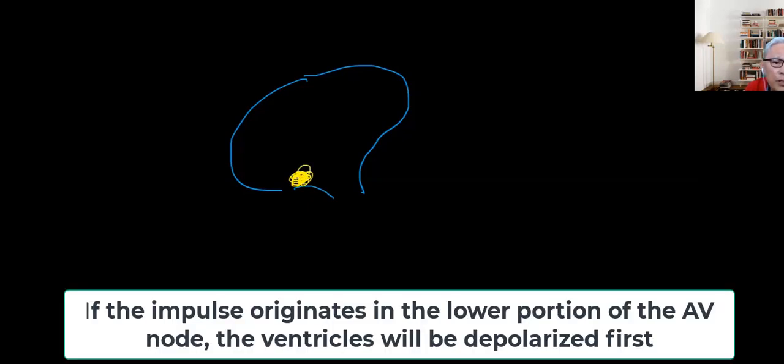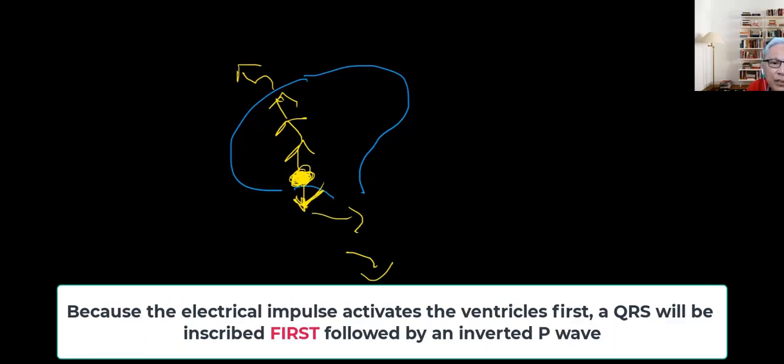Again, if this is the AV node, and this is the bundle branch, or the bundle of His, there's also a possibility that an impulse could come from the AV node, but on the lower region. So now again, the spark is created, and it's going to move this way. So what is going to be activated first? Is it the atria or the ventricles? The ventricle.